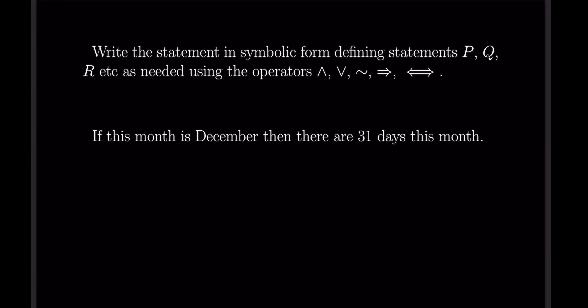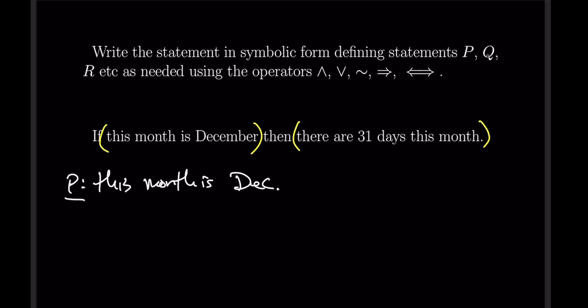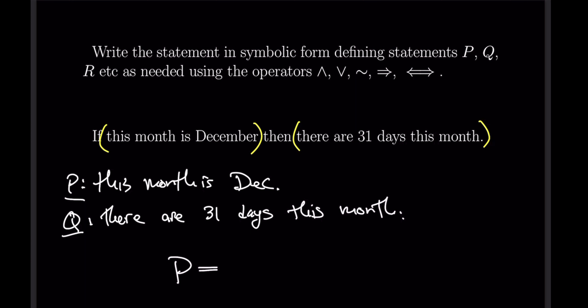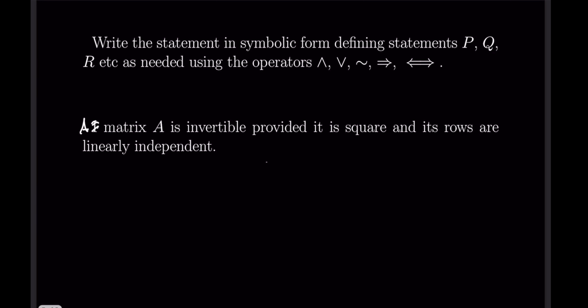Next: 'If the month is December, then there are 31 days this month.' This is an implication already in nice if-then format. Let p be 'this month is December' and q be 'there are 31 days this month.' The statement becomes simply the conditional p → q.